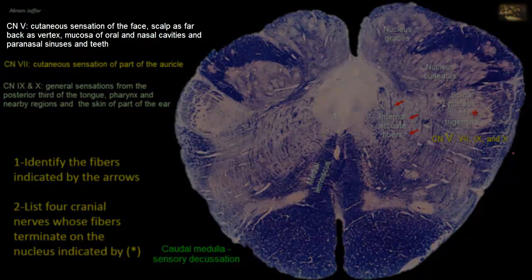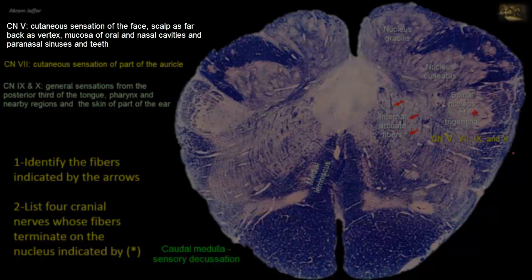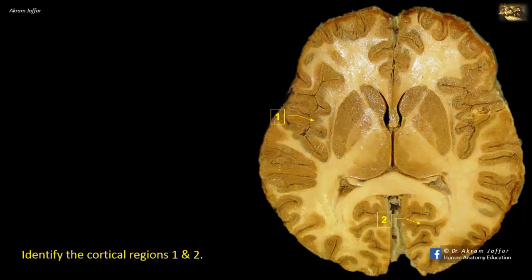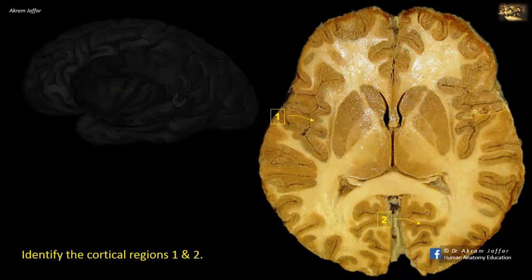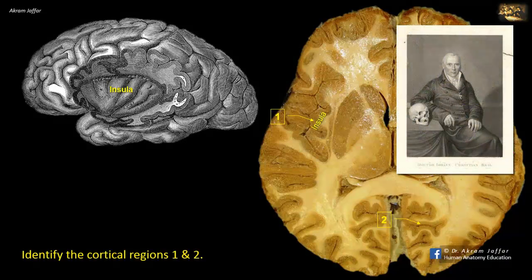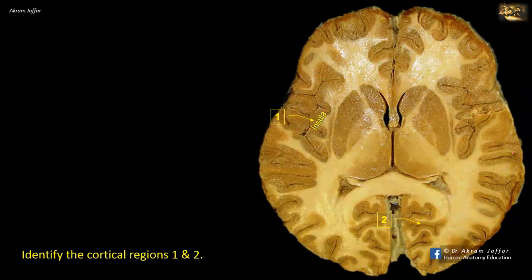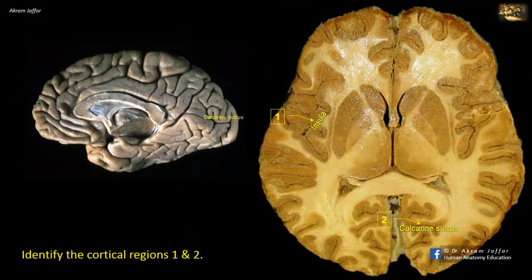It is the trigeminal nerve that is the main sensory contributor for general sensation in the head, hence the name of the nucleus — the spinal nucleus of the trigeminal nerve. Identify the cortical regions 1 and 2. Number 1 is the insula, or island of Reil, an area of cortex buried in the depth of the lateral sulcus of the cerebral hemisphere. The insula has diverse functions, including the control of visceral activities and homeostasis by the autonomic nervous system. Number 2 is the location of the primary visual cortex on the sides of the calcarine sulcus, on the medial surface of the occipital lobe.